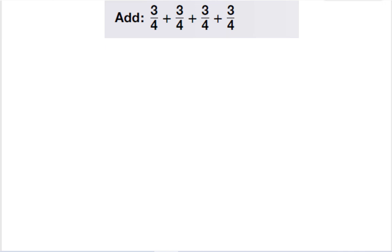Alright, so let's add this one up. So again, I know that the denominator stays the same, it's going to stay 4. And I'm going to add up the 3's. So I have 3, 6, 9, 12. So my answer is 12 fourths.